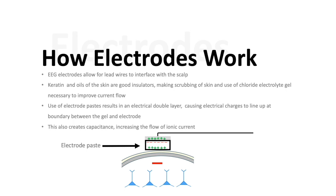A basic understanding of how electrodes work will allow us to understand how these electrical fields and electric potentials can be recorded and then subsequently interpreted as EEGs. EEG electrodes allow for the lead wires to interface with the scalp. Keratin in the oils of the skin are natural insulators. So you have to scrub the skin to get rid of these the best you can and then you use a chloride electrolyte gel which will help improve current flow. The electrolyte gel or electrode paste results in an electrical double layer causing electrical charges to line up at the boundary between the gel and the electrode. It also creates capacitance. This helps increase the flow of ionic current and creates a stable interface for which the signals of the brain can be transferred to ionic currents within the wire.